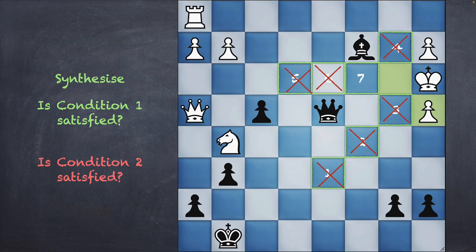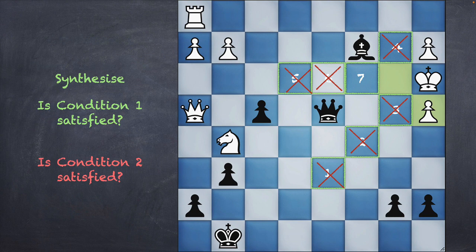For example, checks one, two, and three all have a problem: condition one is satisfied — it's a check — but the king will have an escape square by moving to square four. Checks four, five, and six have the same problem. Squares three and four: it's a check but the king can capture the queen because the queen is unsupported. This gives you the final answer: queen moving to square seven for the checkmate.